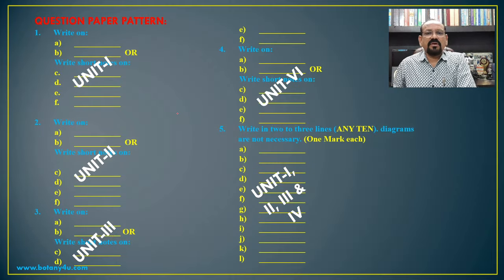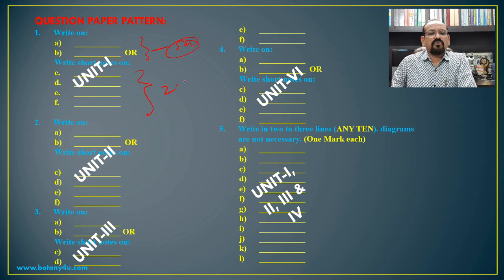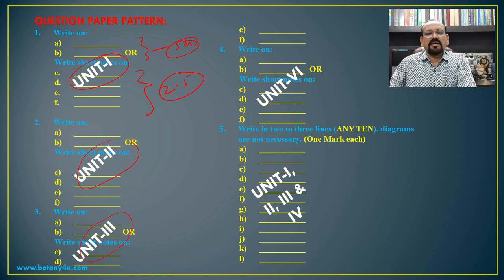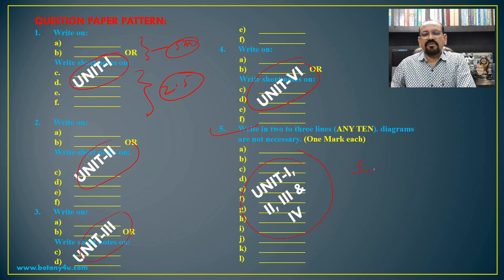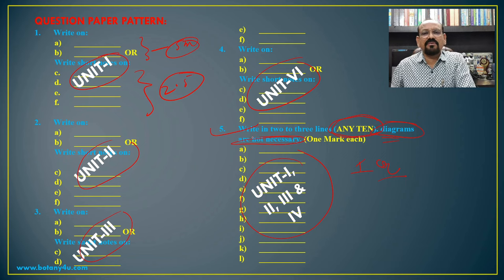As you know from earlier examinations, the question paper pattern includes two questions of five marks each, or four questions of 2.5 marks each, based on each unit — Unit 1 for Question 1, Unit 2 for Question 2, Unit 3 for Question 3, and Unit 4 for Question 4. Question 5 is based on all four units with one mark each, and out of 12 questions you attempt any 10. I suggest you attempt all 12 to maximize your marks. Also, diagrams are not necessary for Question 5 — don't waste time drawing them.